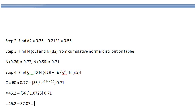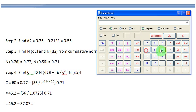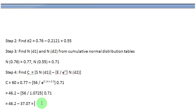And that means 46.2 minus 37.07 is going to give me the value of this call option, which is 9.13 or $9.13.